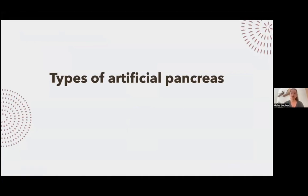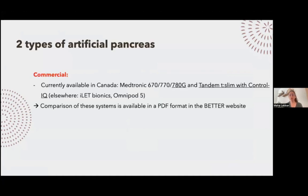The first type of artificial pancreas you may know is the commercial artificial pancreas. The currently available ones in Canada are the Medtronic from 670G all the way to 780G, and the Tandem T-Slim with Control IQ. Elsewhere in the world, especially in the United States, you have the iLet Bionic and the Omnipod 5. You can find a comparison of these available systems in Canada on the BETTER website, which is very informative and lets you compare the different setups and settings.